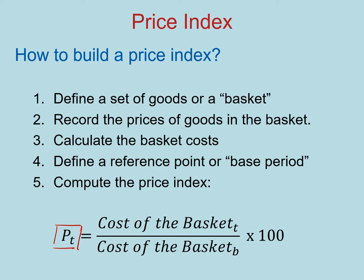To find the value of the price index in the period T, what we're going to do is divide the cost of the basket at time period T by the cost of the basket in the base year, then multiply it by 100. That value of P_T is a comparison of how large or how small the cost of the basket is compared to the cost of the basket in the base period. We do this dividing by the cost of the basket in the base year to have a unitless index — we're not using dollars or yen anymore. We are using a simple index, all compared to and based off the cost of the basket in the base year.